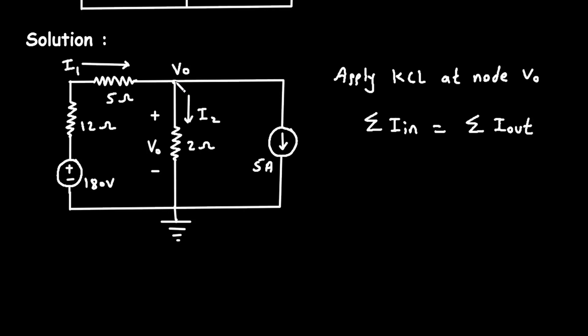Here entering current is I1, and is equal to leaving currents, which are I2 leaving from here and this 5 ampere is also leaving. So, I2 plus 5.